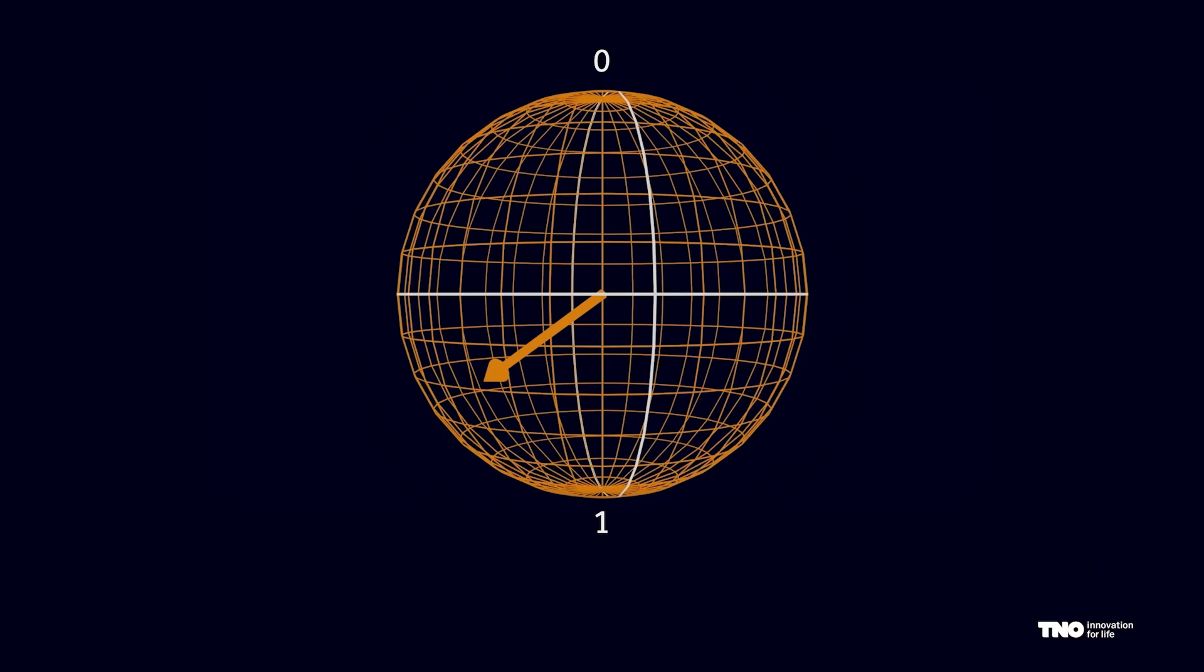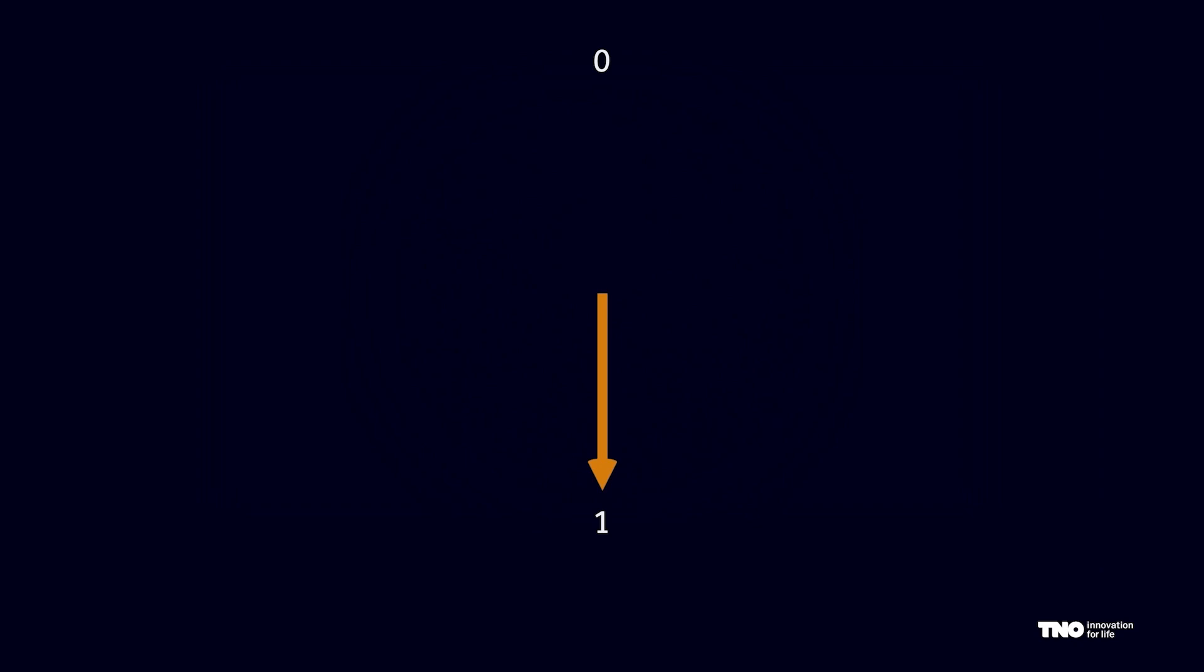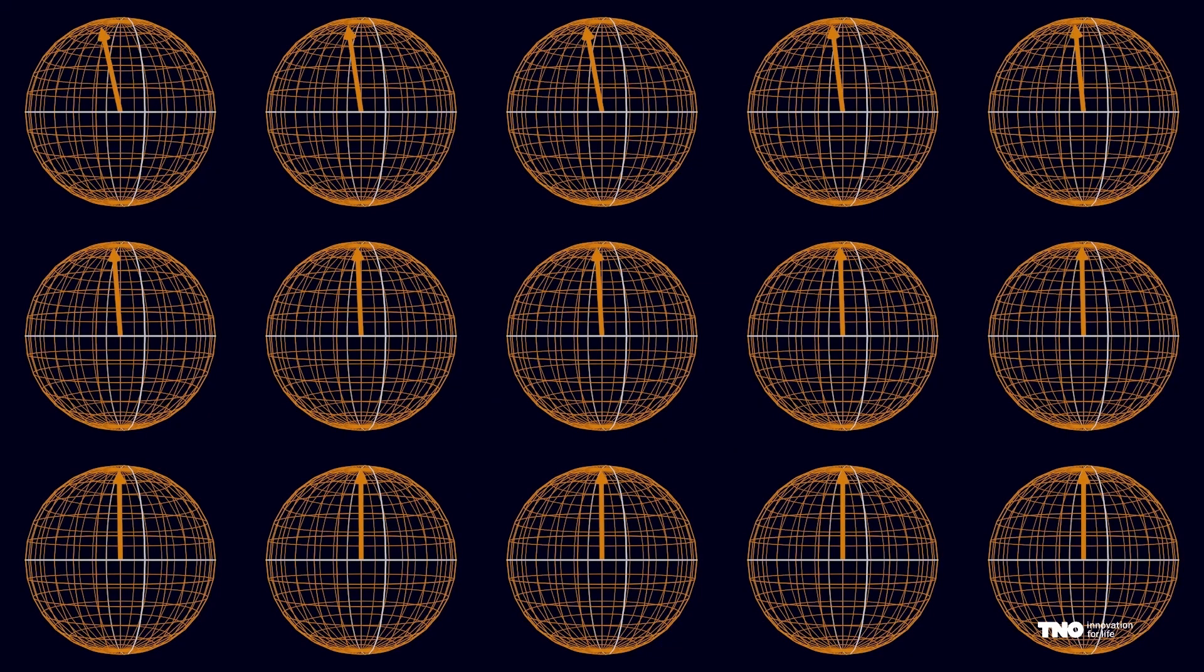There is a catch though. It is not possible to observe this vector on the sphere because as soon as you try to measure a qubit it collapses to either zero or one. And this collapse is not deterministic. The orientation of the vector gives the underlying probabilities of measuring zero or one. If the vector is closer to zero it is more likely to measure zero.